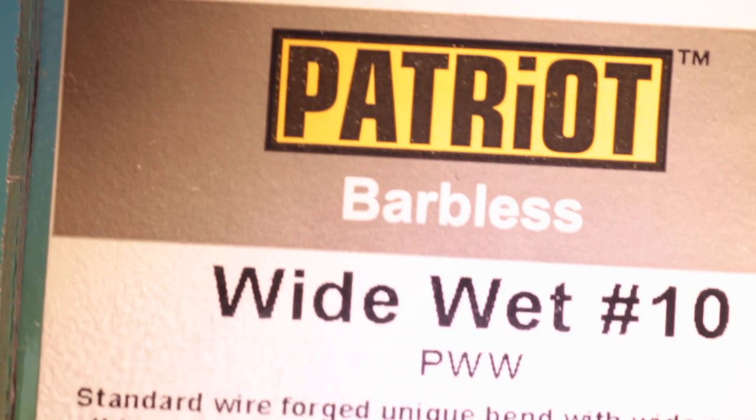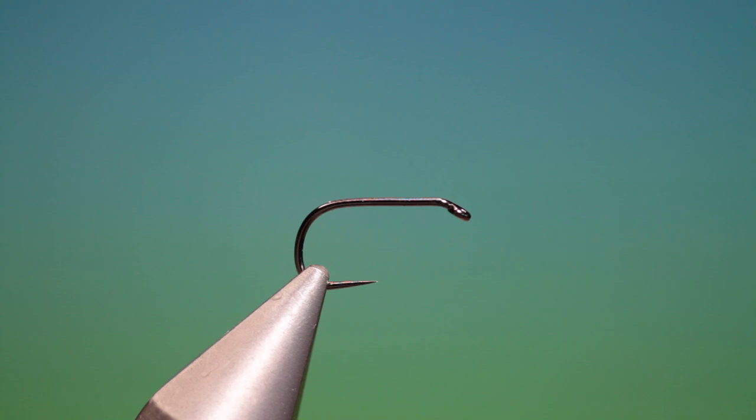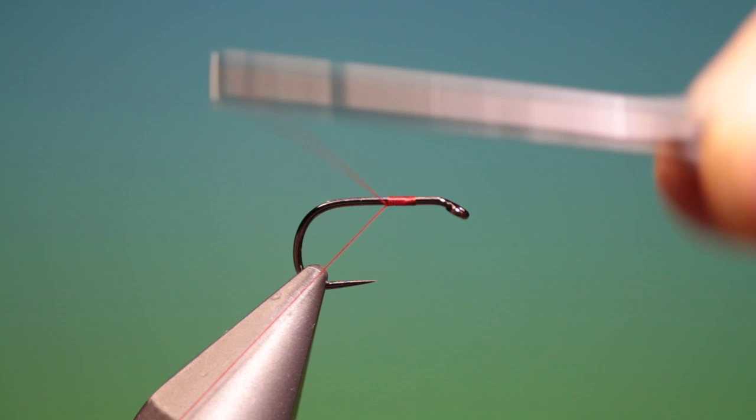We'll start with the partridge wide gate wet barbless size 10. We have some sheer 40 nought red. I'll just attach this there. This is a water boatman, a very good still water pattern.